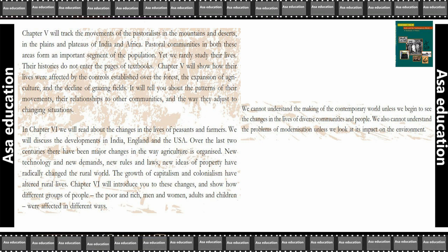Chapter 5 will also show how their lives were affected by the controls established over the forest, the expansion of agriculture, and the decline of grazing fields. It will tell you about the patterns of their movement, their relationship to other communities and the way they adjusted to changing situations.